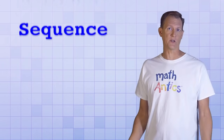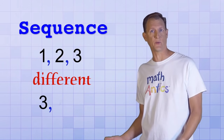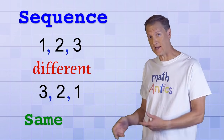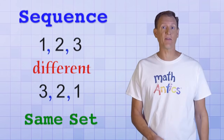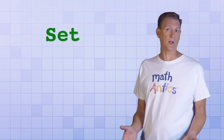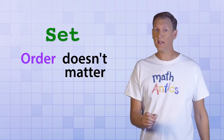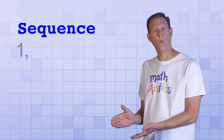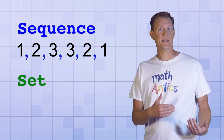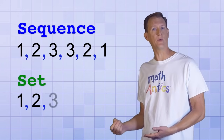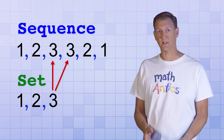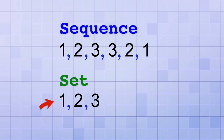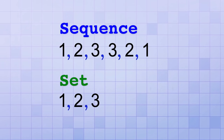For example, the sequence 1, 2, 3 is different than the sequence 3, 2, 1, even though they each contain the same set of numbers. In math, the word set refers to a group of numbers or elements where the order doesn't matter and where any duplicates are left out. So if you had the sequence 1, 2, 3, 3, 2, 1, the set of numbers in that sequence is just 1, 2, 3, even though each number occurred twice. Both sets and sequences use the same notation — each number is separated by a comma and the whole group is put inside curly braces.